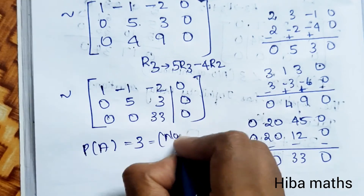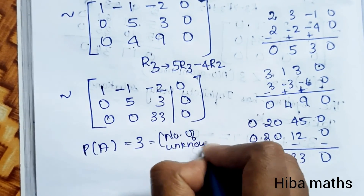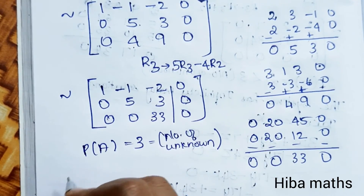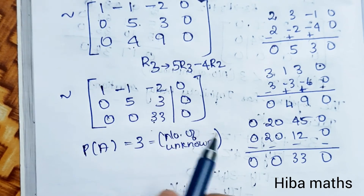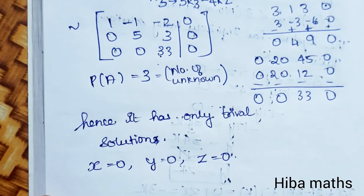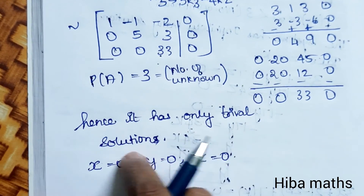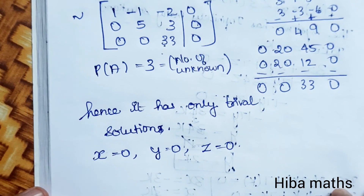Since rank of A equals the number of unknowns (3), the system has only a trivial solution. That means x = 0, y = 0, z = 0. The system has only trivial solution. Thank you so much for watching.